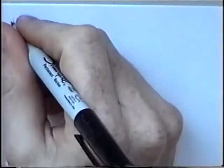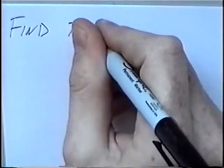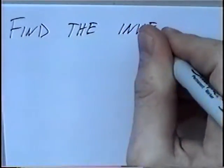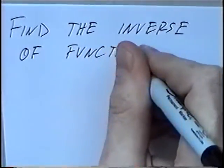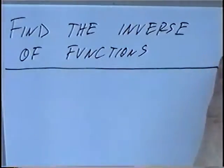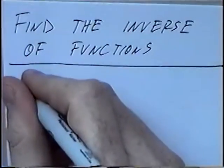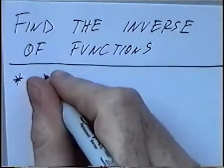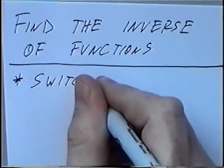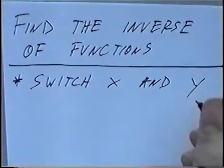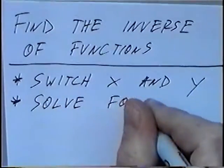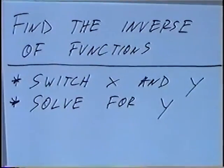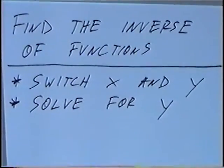The title of the next section is find the inverse of functions. In this section we'll find the inverse of functions. There are two steps: the first step is switch x and y, and the second step is solve for y. So the same as with points, if we have a function, we can first switch the x and the y, and then solve for y to get our final answer in y-equals form.